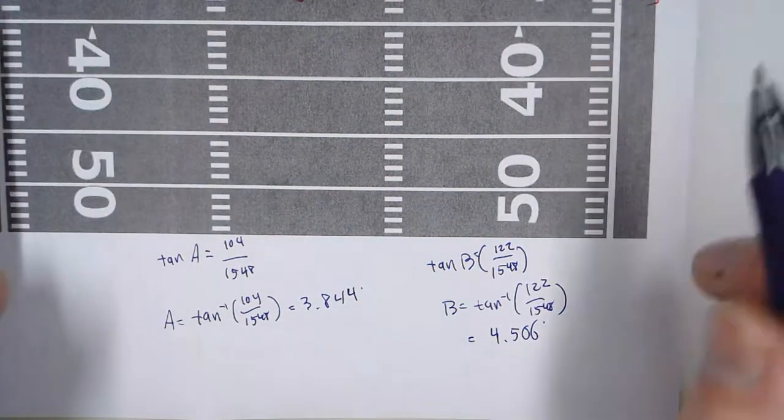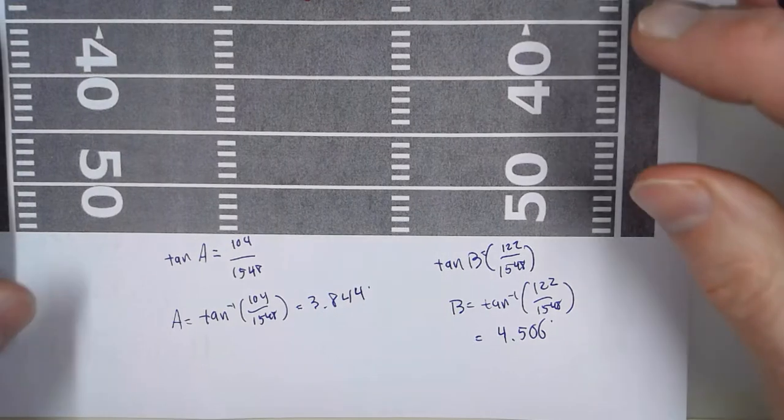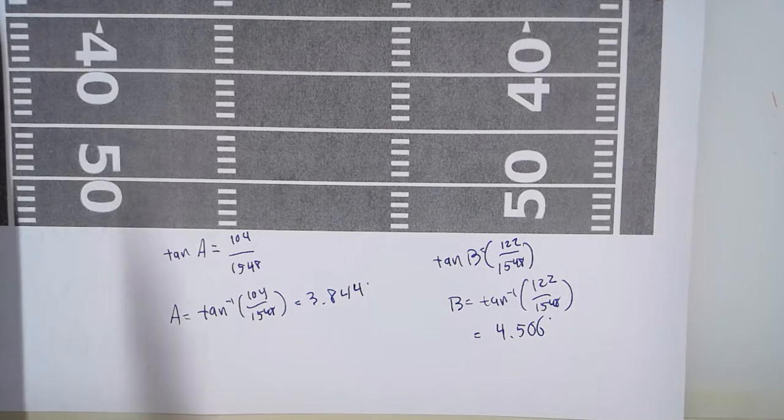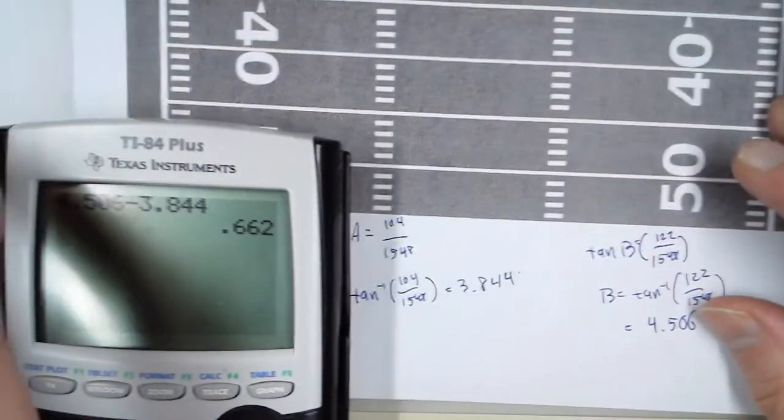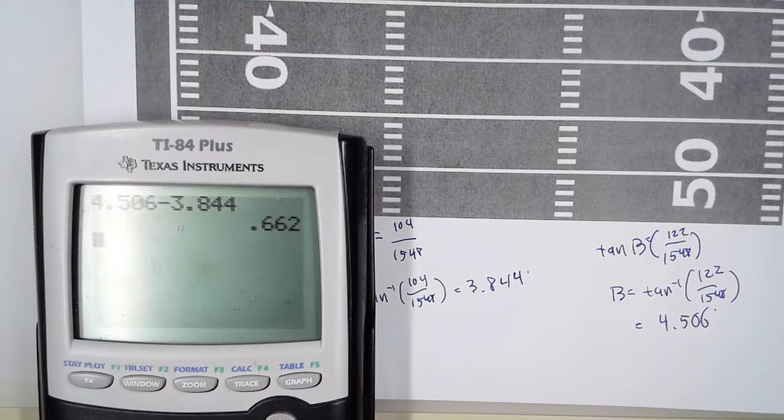Now we have to subtract them because we want the difference, because that represents the angle that the ball would have to be traveling in to hit the actual goalposts. So 4.506 minus 3.844, and that is 0.622. But remember, there are two goalposts, not one. So we have to double that.